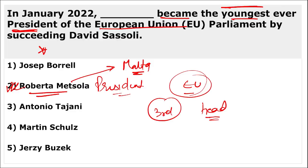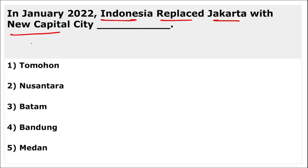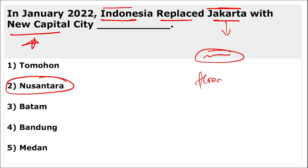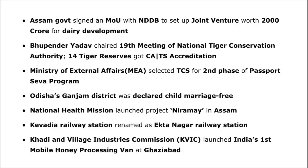Indonesia replaced Jakarta with Nusantara as its new capital — Jakarta was shifted because it is very prone to flooding and climate change. The Assam government signed an MoU with NDDB to set up a joint venture worth 2,000 crore rupees for dairy development.